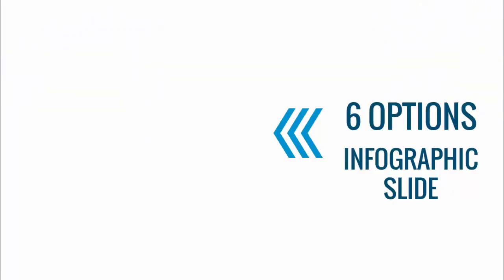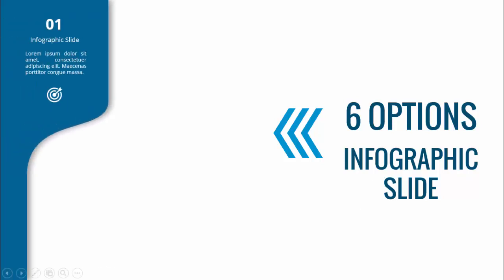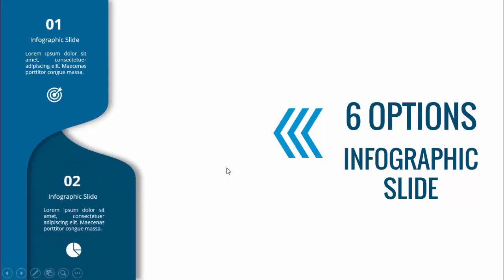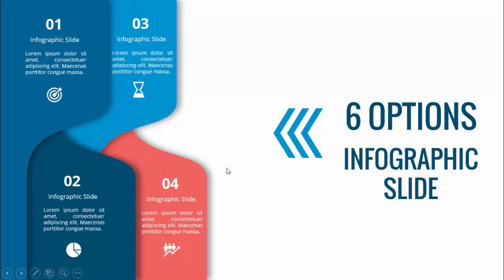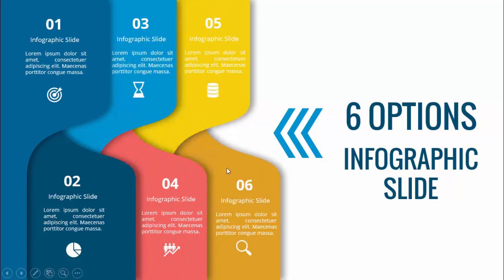In today's tutorial I'm going to show you how to make a six options infographic slide in PowerPoint. This is how the slide works — when I click it will show the first option. You can see I've created this shape where you can add the option number, the title, the detailed text, along with an icon. When I click it will show the next option, then option three, four, five, and six.